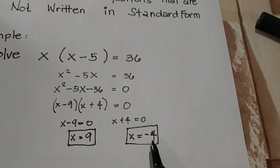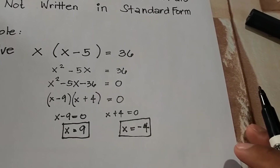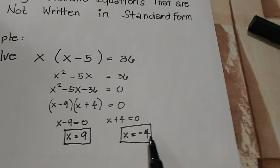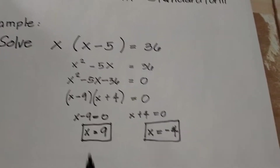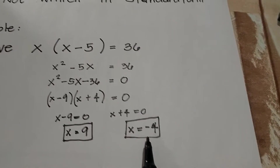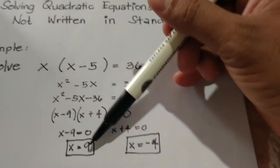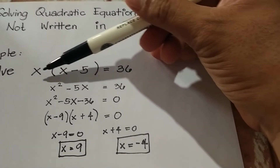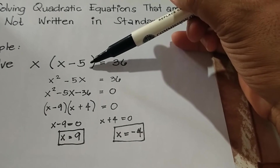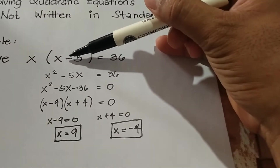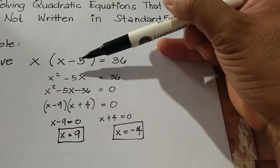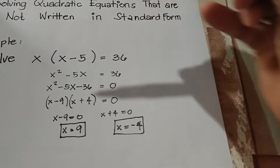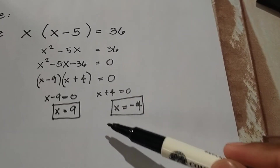So we now have the values of x: x sub 1 is equal to 9, and x sub 2 is equal to negative 4. Remember to check whether the obtained values really make the equation true. Substituting 9: 9 times (9 minus 5) equals 9 times 4, which gives 36. Substituting negative 4: negative 4 times (negative 4 minus 5) equals negative 4 times negative 9, which gives positive 36. We are sure our values are 9 and negative 4.